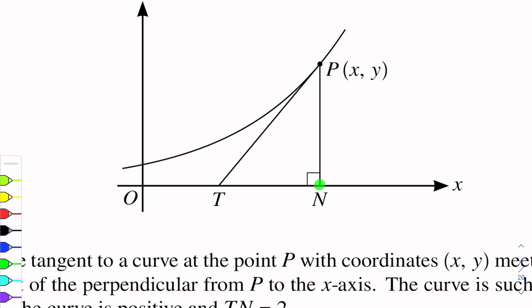N is the foot of perpendicular. This is the perpendicular. N lies on the x-axis and N is called the foot of perpendicular. As a whole, PN is perpendicular and N is the foot of perpendicular.